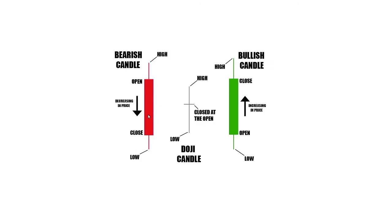On the bearish candle, it's the exact opposite because the price is going down. The price opened here and closed after the five minutes at a lower price than at the open — that's why the candle is red. Always remember: on a bearish candle, the open is at the top and the close is at the bottom. On the bullish candle, it opens here and by the end of the five minutes it will close at a higher price.